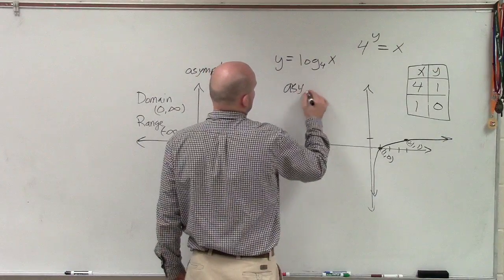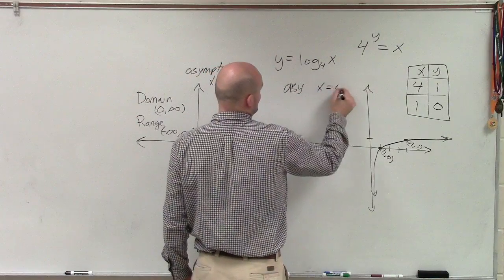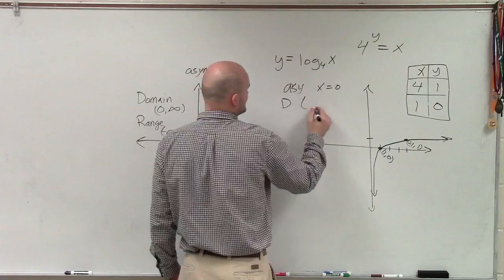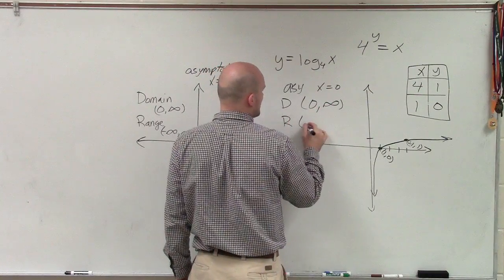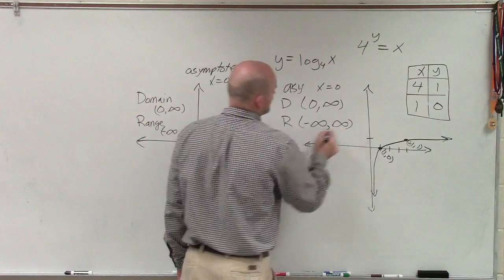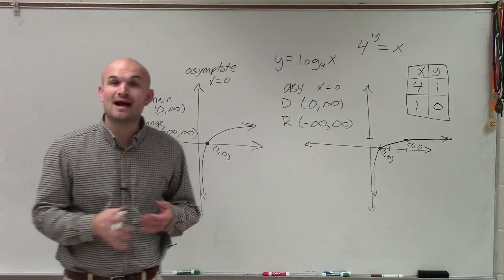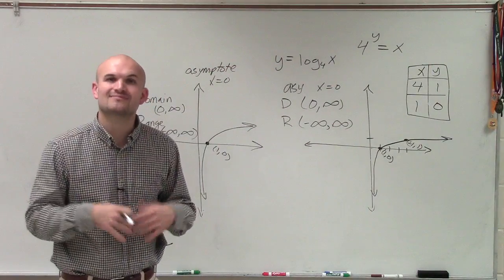So therefore, my asymptote is still going to be at x equals 0. My domain is still going to be from 0 to infinity, and my range is still going to be from negative infinity to infinity. So there you go, ladies and gentlemen. That's how you graph just a general logarithmic equation. Thanks.